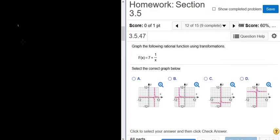We have to graph the function F(x) equals 7 plus 1 over x. So we have to start with 1 over x.